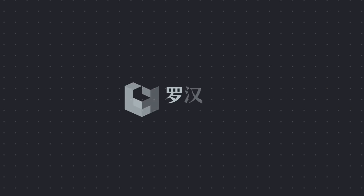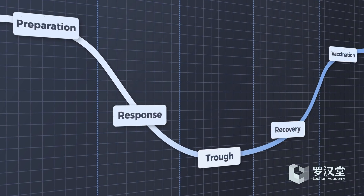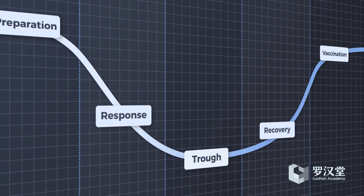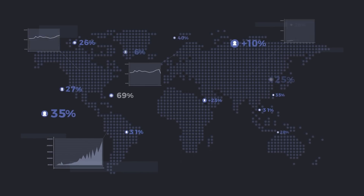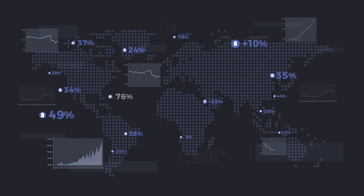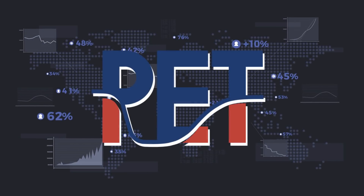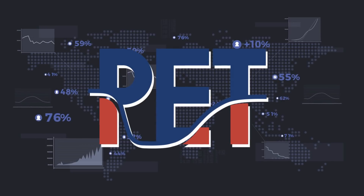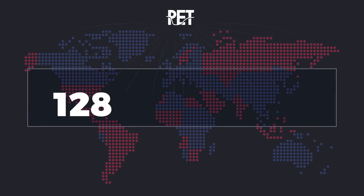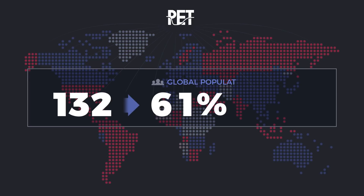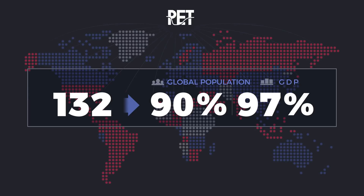The Lujan Academy developed a five-phase pandemic economy framework to analyze how this trade-off evolves. By leveraging publicly available big data to measure economic contraction as well as epidemic growth information, we created the Pandemic Economy Tracker, or PET. It covers more than 130 countries, accounting for nearly 90% of global population and 97% of global GDP.